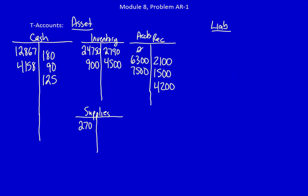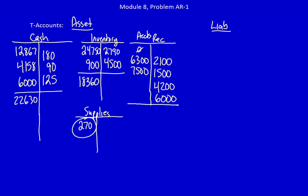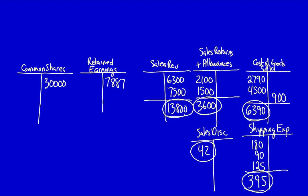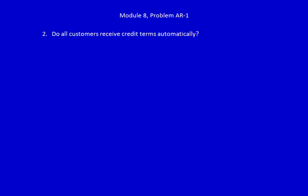T-account totals: cash $22,630, inventory $18,360, supplies no change, accounts receivable equals zero. Sales revenue $13,800, sales returns $3,600, sales discounts $42, cost of goods sold $6,390, shipping expense $395. No change to retained earnings or common shares. We could now create a multiple-step income statement for Peach Limited. Do all customers receive credit terms automatically? That's a question for the next video.